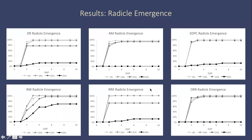Pictured here is a graph for each of the cultivars. On the x-axis is the number of days after planting, and on the y-axis is the percent of seeds planted. For radical emergence, there was a large difference in each of the six cultivars between the 25% concentration of regolith and the 50% concentration.